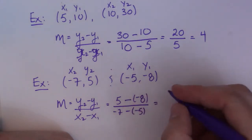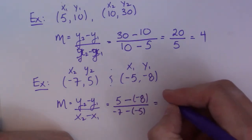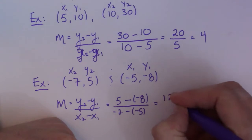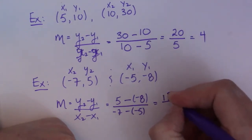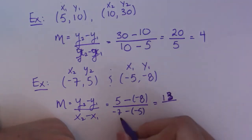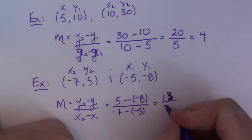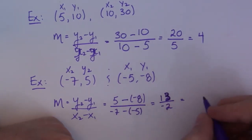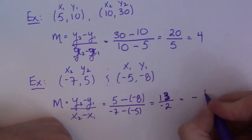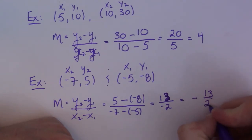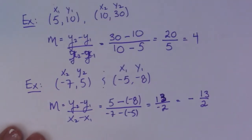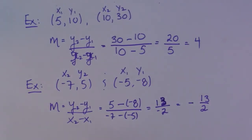X2 subtract X1. Y2 subtract Y1. So 5 subtract negative 8, that's actually going to be 13. And then negative 7 subtract negative 5. So that's the same as plus 5. So that's negative 2. So then I don't like to leave a negative on the bottom here, guys. So I'll just tack it on to the front here. Negative 13 over 2. And that's my slope. So sometimes slopes are not a nice number, but that's just how it is.